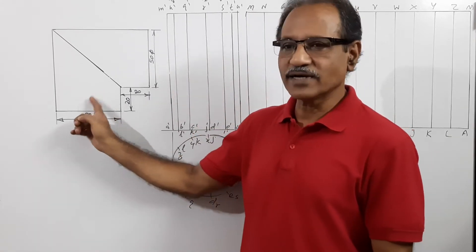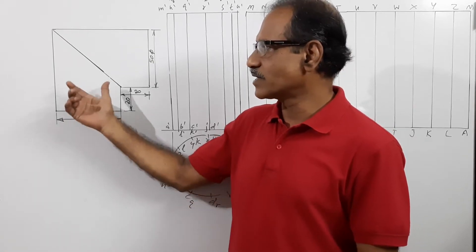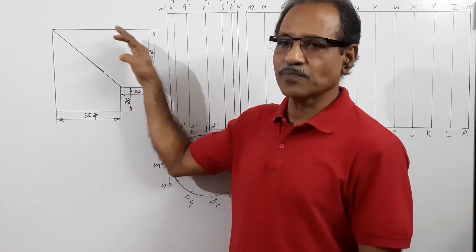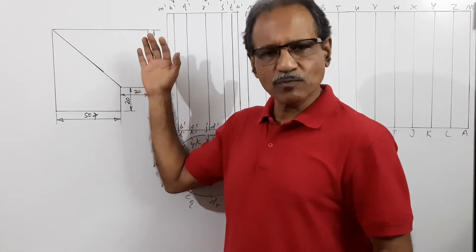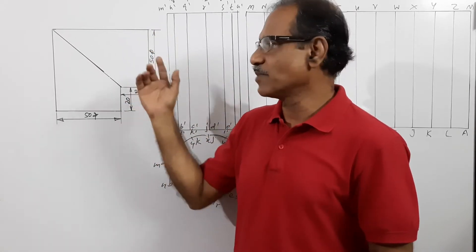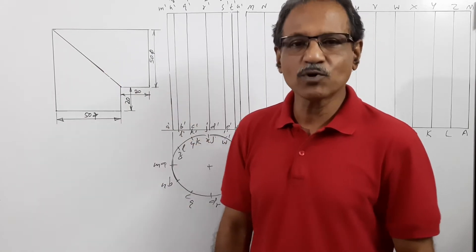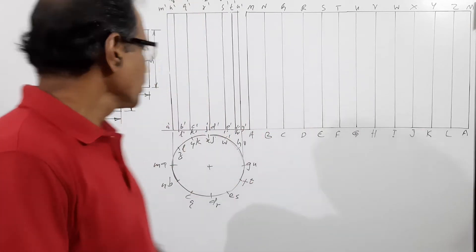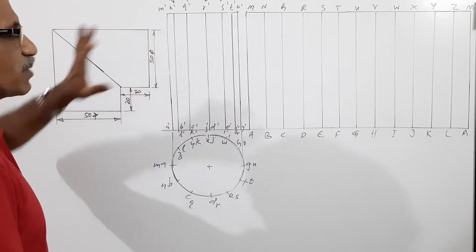This is the question given. This is the shape of the elbow. It's a pipe 50 mm diameter connected to another pipe at 90 degrees to another pipe of same diameter, 50 mm diameter. This is the shape of the elbow that is given. 50 mm diameter, 20 mm on this leg, 20 mm on this leg.